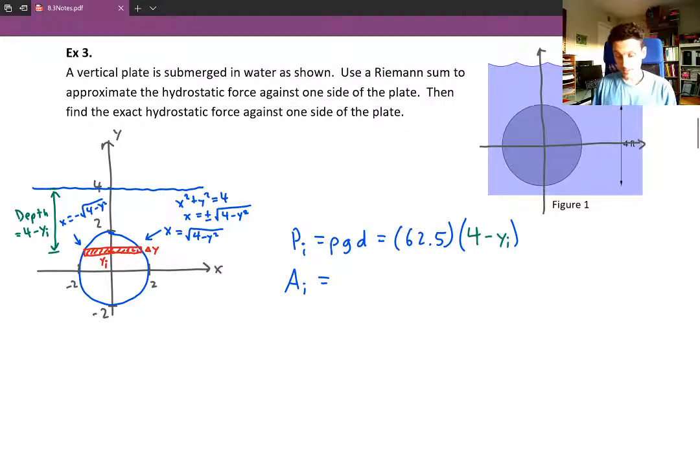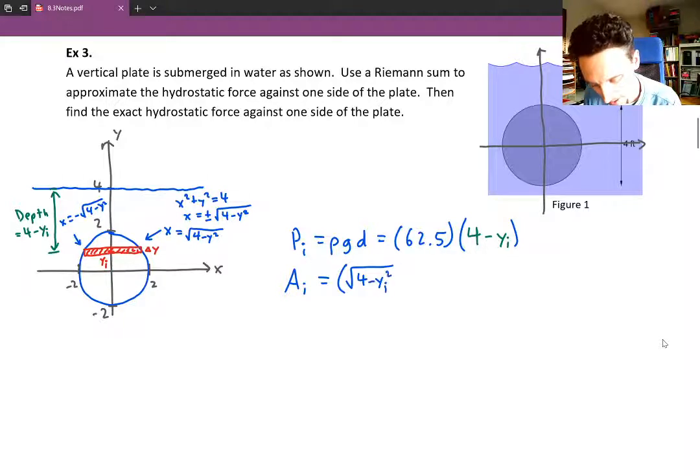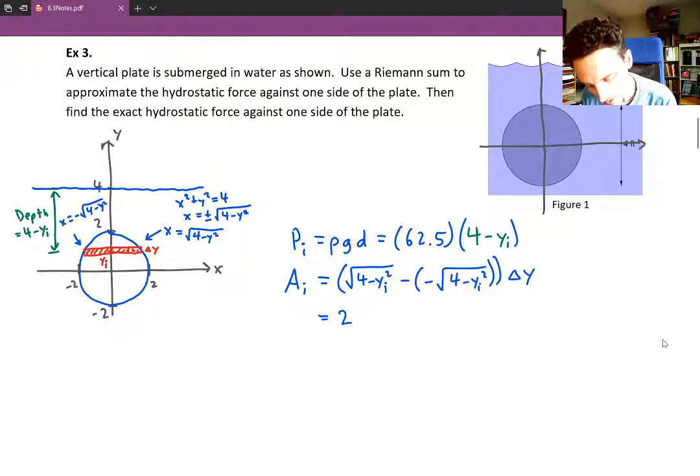So the distance across is going to be the right x value minus the left x value, which is going to be the square root of 4 minus y squared minus negative the square root of 4 minus y squared, which is 2 the square root of 4 minus y squared. I'm just going to write out that whole calculation. So square root of 4 minus y sub i squared, and then minus negative the square root of 4 minus y squared. And delta y is your other dimension for that rectangle. This is going to be 2 times the square root of 4 minus y squared, delta y.